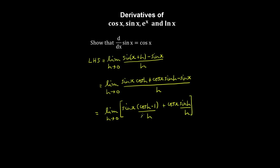We've shown previously that this limit evaluates to zero, and this one here evaluates to one as h approaches zero. So we basically split these into two limits using the limit rules, and therefore the derivative of sine x is cosine x.